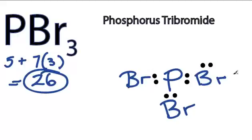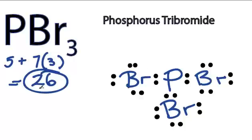So we have 6, 8, 10, 24, and we have 26 minus 24. We have 2 left over, but we'll just put them right here on the central phosphorus atom.